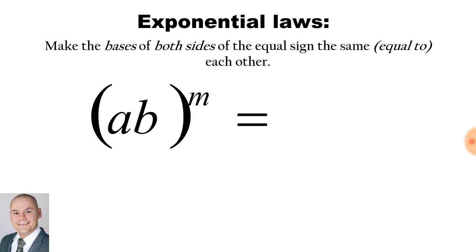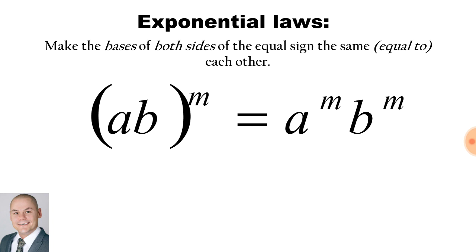Here we have the bases a and b inside the bracket to the exponent of m. Make the bases of both sides of the equal sign the same or equal to each other. Therefore we would have the base a to the exponent of m, and the base b to the exponent of m.